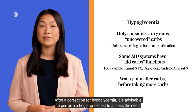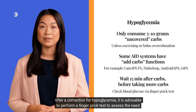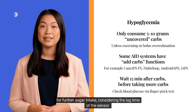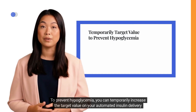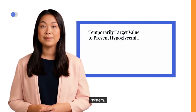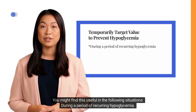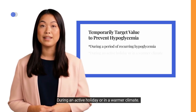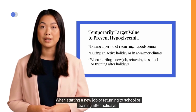After a correction for hypoglycemia, it is advisable to perform a finger-prick test to assess the need for further sugar intake, considering the lag time of the sensor. To prevent hypoglycemia, you can temporarily increase the target value on your automated insulin delivery system. This may be useful during recurring hypoglycemia, an active holiday or warmer climate, or when starting a new job or returning to school after holidays.